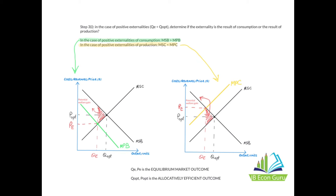Remember: Q e and P e represent the equilibrium market outcome — what the market is actually providing — while Q opt and P opt represent the allocatively efficient outcome — what the market should be providing. In the case of positive externalities of consumption, there is a problem of under-consumption. In the case of positive externalities of production, there is a problem of under-production — that's why Q e is less than Q opt.